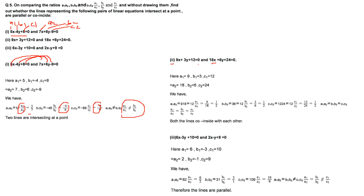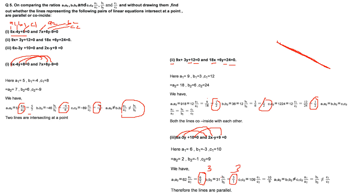For coincident lines, all three ratios must be equal: A1/A2 = B1/B2 = C1/C2. For example, 6/2 = 3, 3/1 = 3 — equal — but 10/9 is not equal to 3, so A1/A2 = B1/B2 ≠ C1/C2 means these are parallel. When all three ratios are equal — as in another case — the lines are coincident, meaning they are the same line.